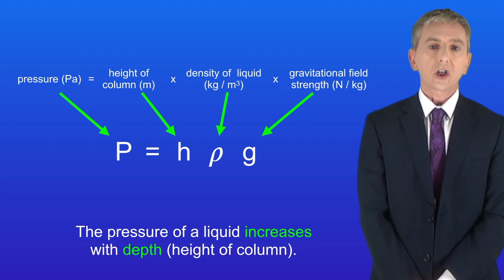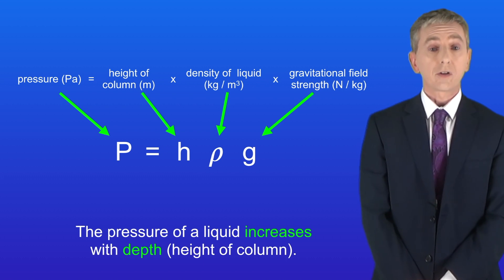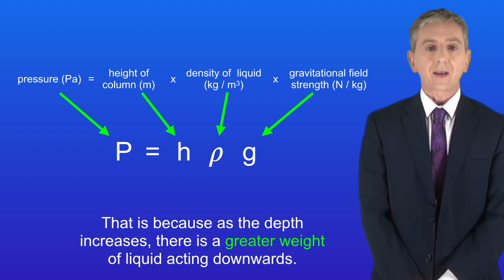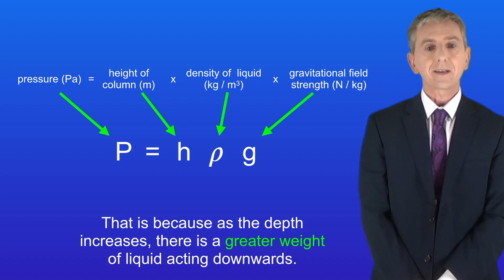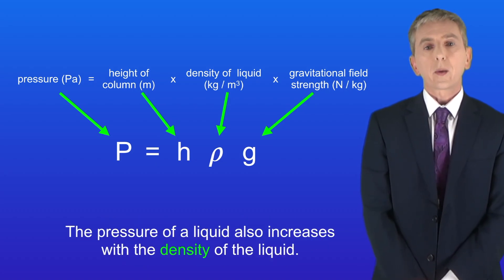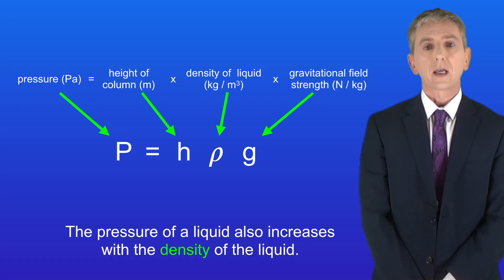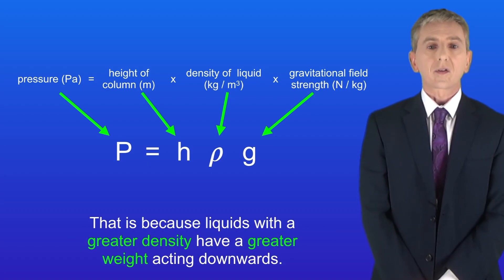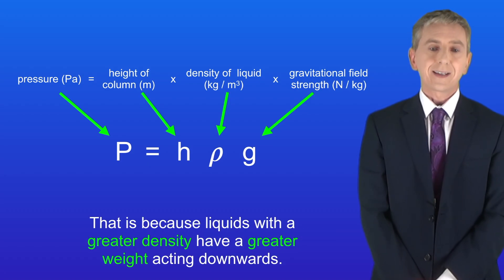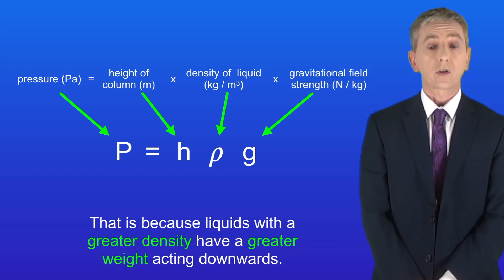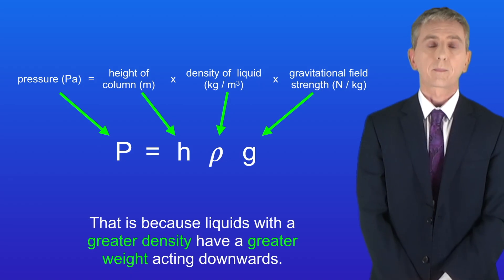The pressure of a liquid increases with depth, because as the depth increases there's a greater weight of liquid acting downwards. The pressure of a liquid also increases with the density of the liquid — again because liquids with a greater density have a greater weight acting downwards.